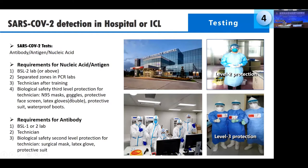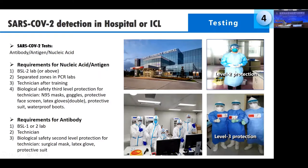Biological safety level 3 protection for technicians requires N95 masks, goggles, protective face shields, double gloves, a protective suit, and waterproof boots — required for nucleic acid and antigen testing. For antibody testing, the requirements are simpler; it can be done in BSL-1 or BSL-2 labs with only biological safety level 2 protection: a surgical mask, latex gloves, and a protective suit. All detection must be done in a hospital or laboratory.